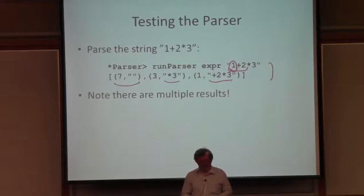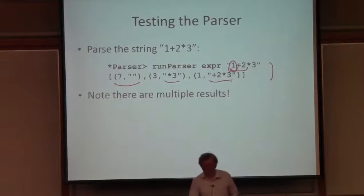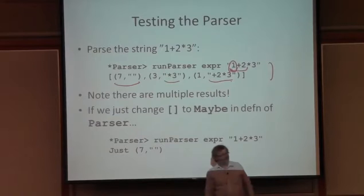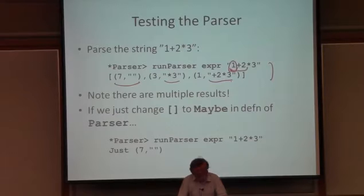Would we like to just get the first result back? All we have to do is change the list type in my monad to a maybe type, and now suddenly we just get the first parse back. Sometimes you want backtracking parsers — it depends on your grammar. Sometimes you need to backtrack, sometimes you don't. For this simple grammar, you don't. So I might just as well have used the maybe type as the underlying monad — that would be maybe a little simpler and a little more efficient.